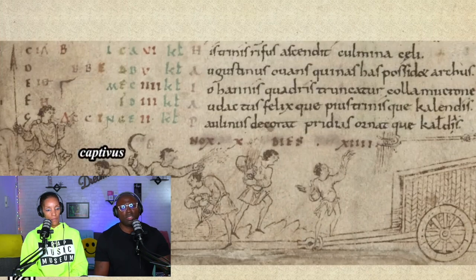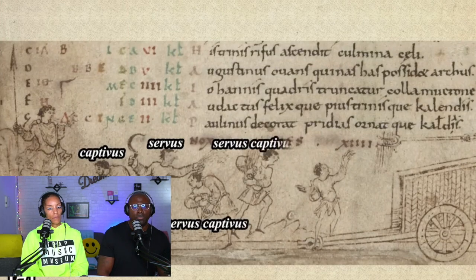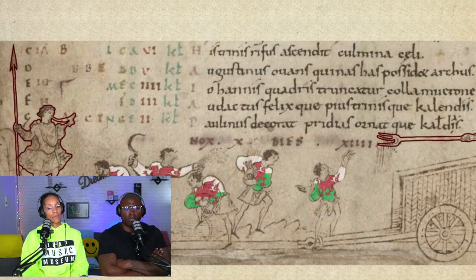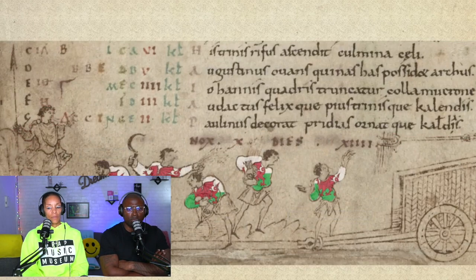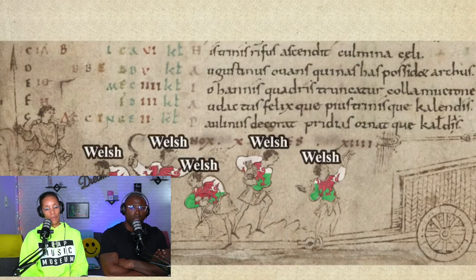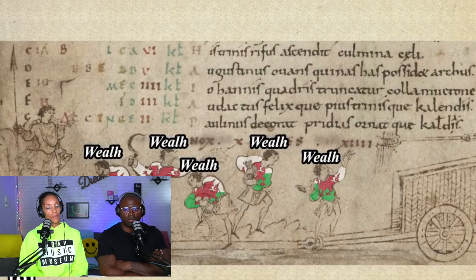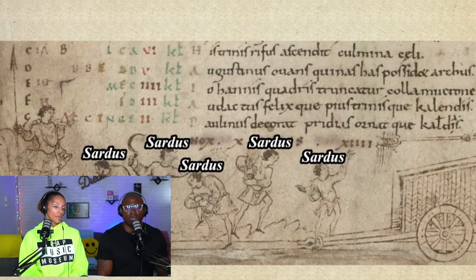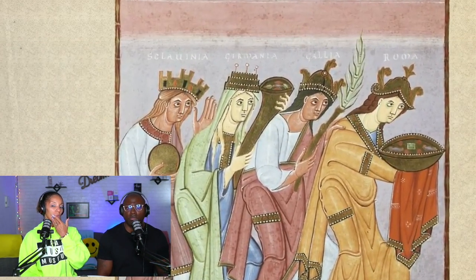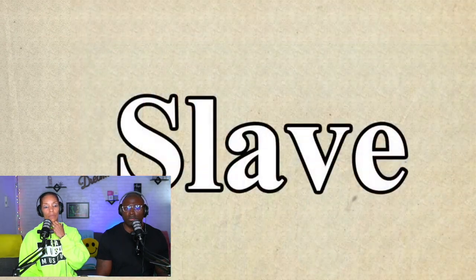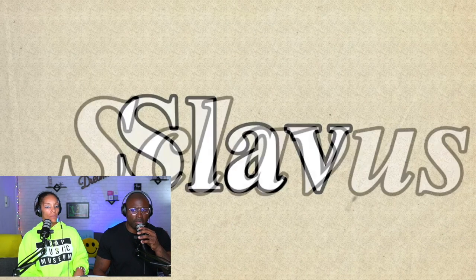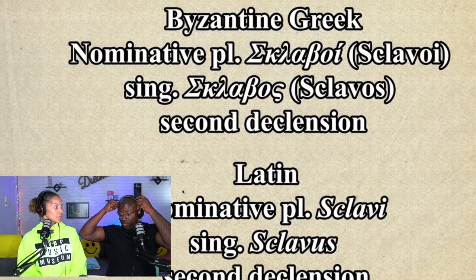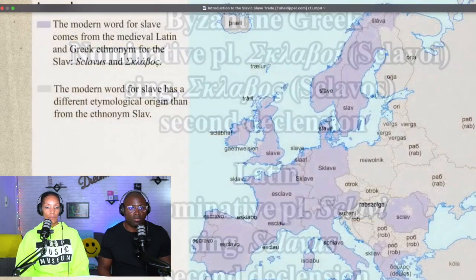Enslaved people were often recorded as 'captivus' or 'servus' plus an ethnonym — for example, 'captivus Wallus' or 'captivus Sardus.' Over time, especially where slaves captured and sold in an area were regularly the same ethnicity, the records were abbreviated to just the ethnonym. In early medieval England, where most captured slaves were Welsh, the Latin word for Welsh — 'Wallus' — became briefly synonymous with slave. The same happened in medieval Genoa with 'Sardus' meaning Sardinian. However, there was one ethnonym that would come to rule them all: 'Slav,' or 'Sclavus' in medieval Latin.